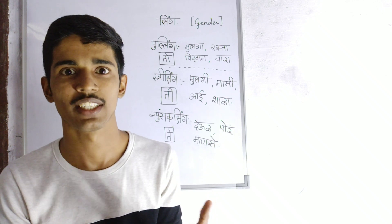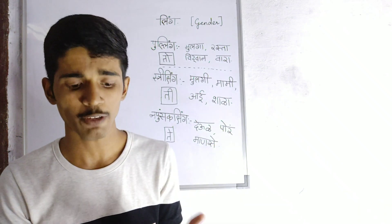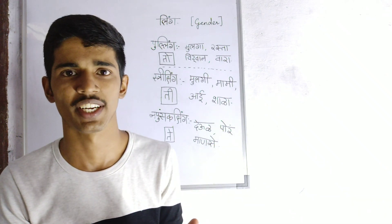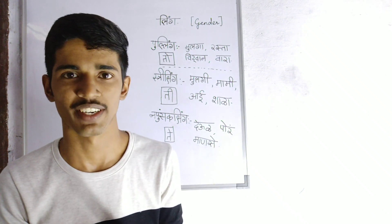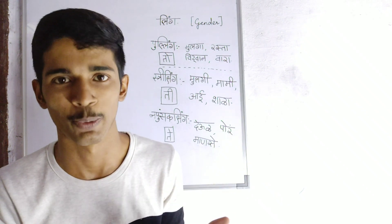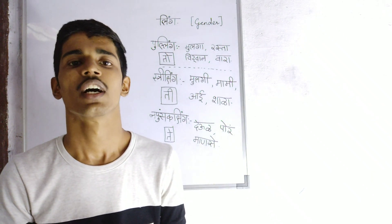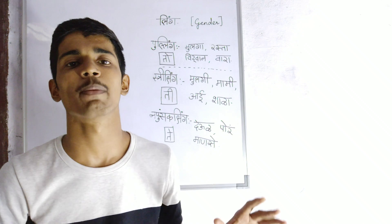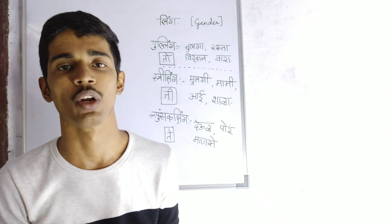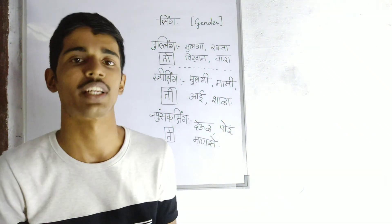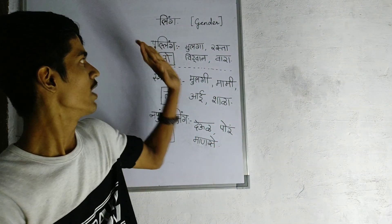Masculine gender is called Pulling, feminine gender is called Strilling, and neutral gender is called Napusakaling. Is that clear? So I have some words for Pulling, Strilling, and Napusakaling for you. Let's see how you know which is which.